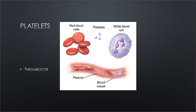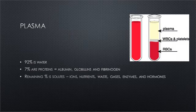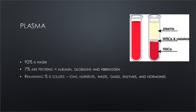Next, let's talk about the plasma a little bit more. The majority of plasma is water. Seven percent is made up of protein, which includes albumin, globulins, and fibrinogen. The remaining is a small percent made up of other things. One thing to know: prothrombin is a globulin found in the plasma. It's a protein manufactured in the liver that helps with vitamin K.